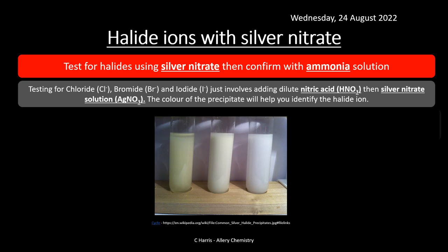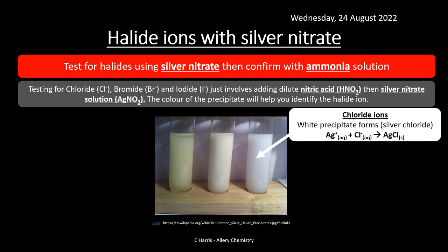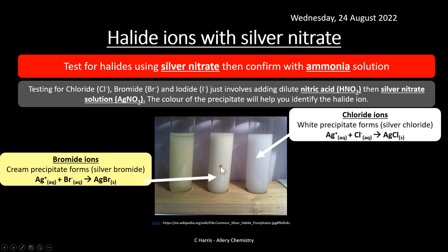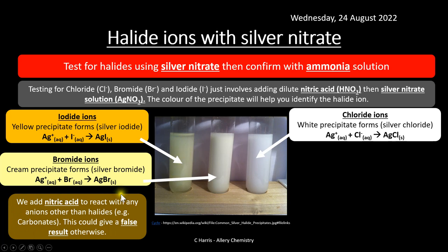If a chloride ion is present, adding dilute nitric acid and silver nitrate gives a white precipitate — silver chloride (AgCl). The Ag⁺ ions react with chloride ions to form AgCl, a solid precipitate. For bromide ions, a cream precipitate of silver bromide forms. For iodide ions, silver iodide forms — a yellow precipitate.